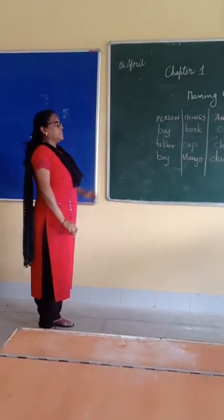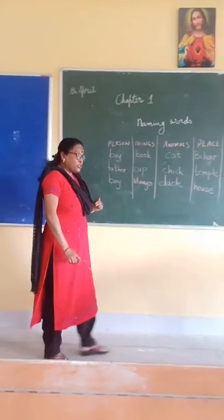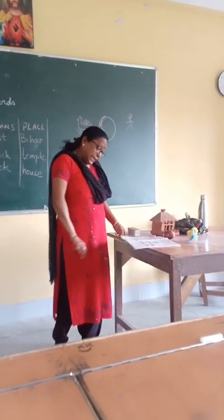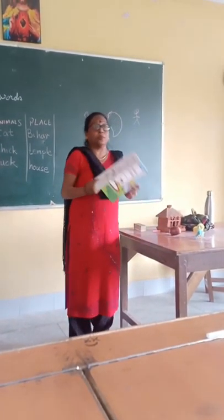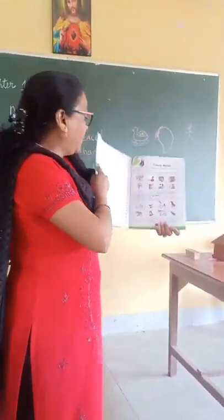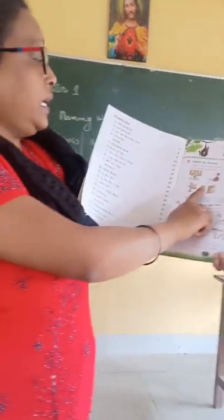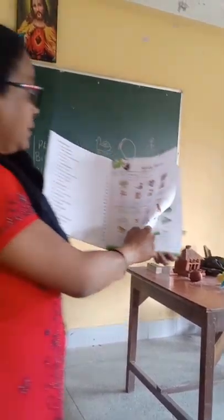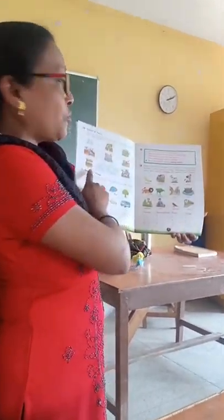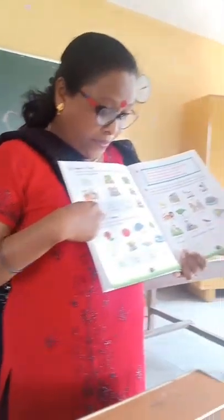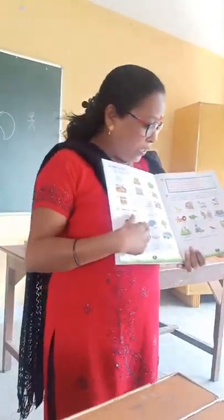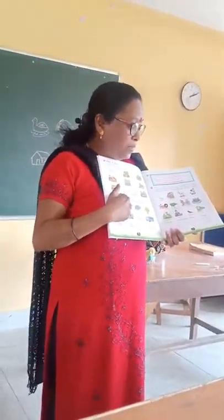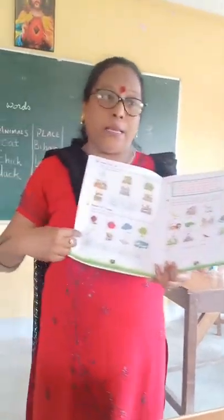Did you understand? This is naming words. So you have to do all your exercises which will be given to you — do it neatly and correctly. Look at the pictures here. Names of persons, names of animals — different animals are here. Names of places — you have to write them. The examples and the words are given here, so please do all your exercise carefully and neatly. If you have any problem, ask your elders and your family to help you. Thank you.